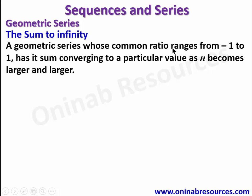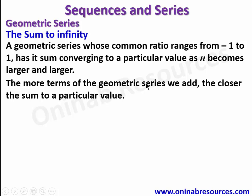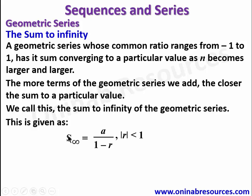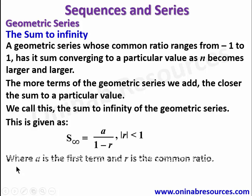A geometric series whose common ratio ranges from negative one to one has its sum converging to a particular value as n becomes larger and larger. The more terms of the geometric series we add, the closer the sum gets to a particular value. We call this the sum to infinity of the geometric series, given by S∞ = a / (1 - r), where r ranges between negative one and positive one, a is the first term, and r is the common ratio.